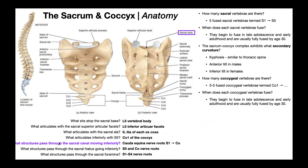What structures pass through the sacral canal moving inferiorly? We can see the sacral canal in the posterior view. Here's the opening of the sacral canal at S1, existing posterior to the base of the sacrum, in between the superior articular facets of S1. It goes down throughout the sacrum — it's essentially just the vertebral canal of the sacrum — and its exit point is the sacral hiatus.